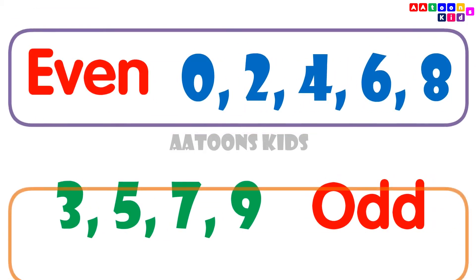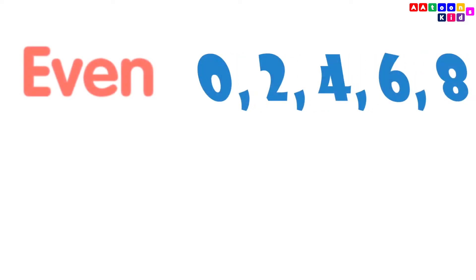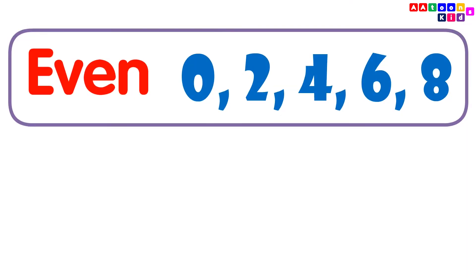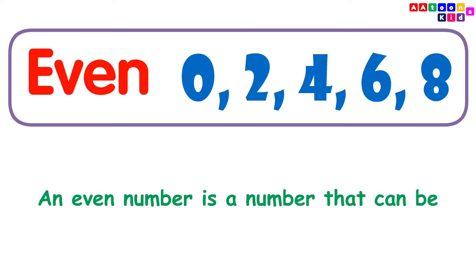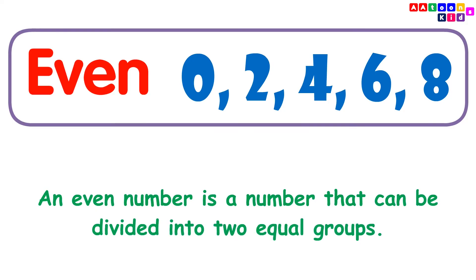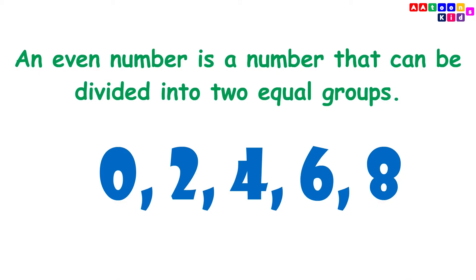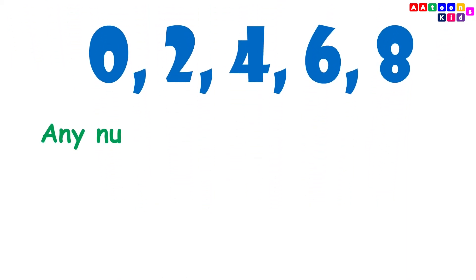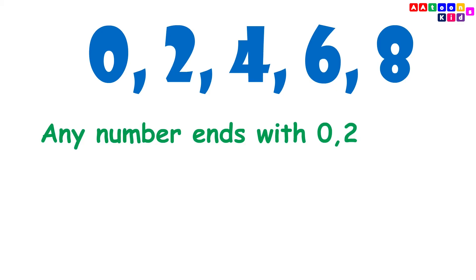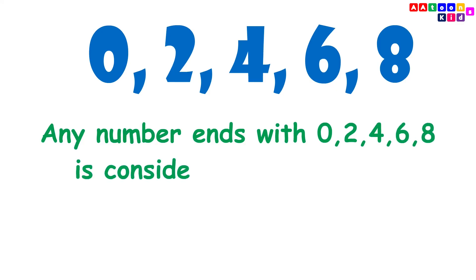Even and odd numbers. An even number is a number that can be divided into two equal groups. 0, 2, 4, 6, and 8 are the even numbers. Any number that ends with 0, 2, 4, 6, or 8 is considered an even number.